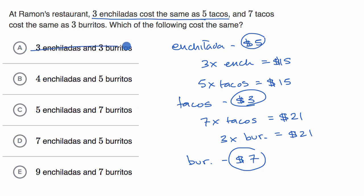And you could have even ruled that out before by saying, look, three enchiladas cost the same as five tacos. You could write this in terms of tacos. And three burritos cost the same as seven tacos. So that's another reason why these two aren't going to be the same.